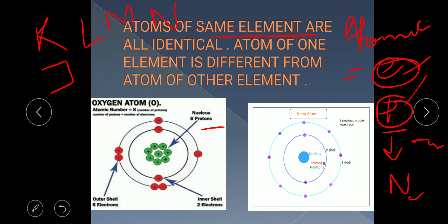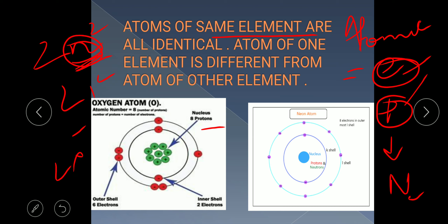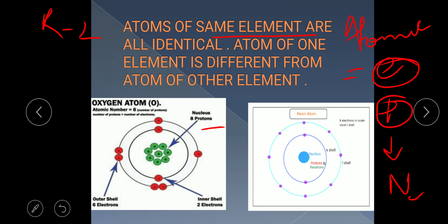Electron shells are named K, L, M, and N. The number of electrons each shell can hold is given by the formula 2N², where N is the shell number. So the K shell (N=1) holds 2×1²=2 electrons, the L shell (N=2) holds 2×2²=8 electrons, the M shell holds 18 electrons, and the N shell holds 32 electrons.